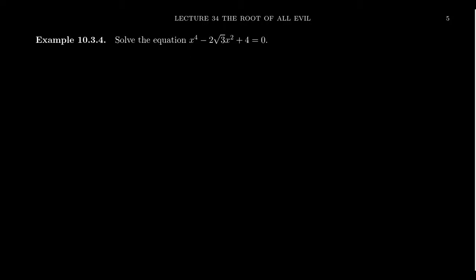That 2 root 3 is concerning me in terms of factoring, so I might instead choose the quadratic formula. It usually goes x equals negative b plus or minus the square root of b squared minus 4ac all over 2a. But instead of being x equals, it's actually going to be x squared equals, because that's the fundamental term in this situation.